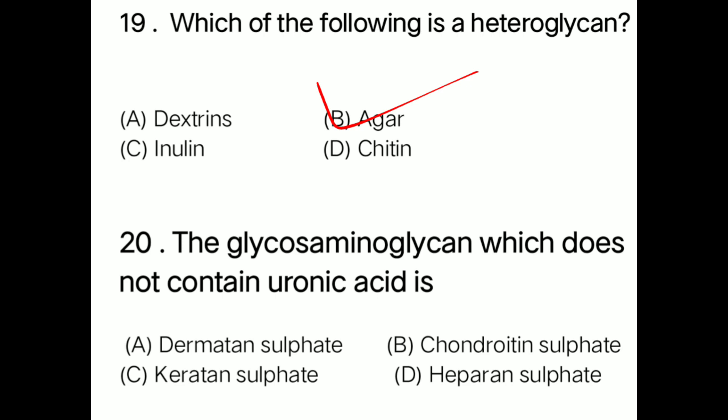Question: The glycosaminoglycan which does not contain uronic acid is option A dermatan sulfate, option B chondroitin sulfate, option C keratan sulfate, option D heparan sulfate. Correct answer is option B: chondroitin sulfate.